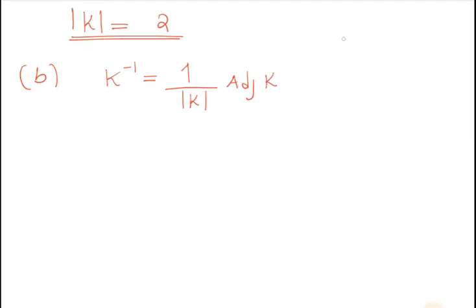So let's find this. We know that K is (10, -2; 11, -2). The adjoint of K is equal to: you swap the major diagonal elements.